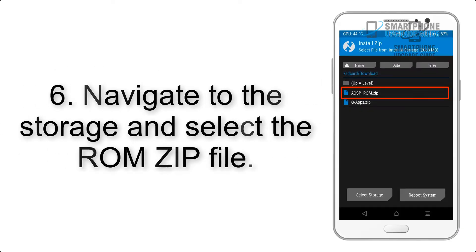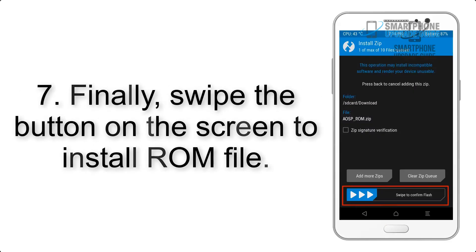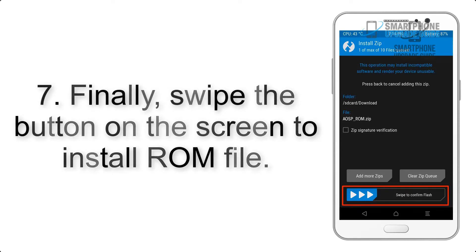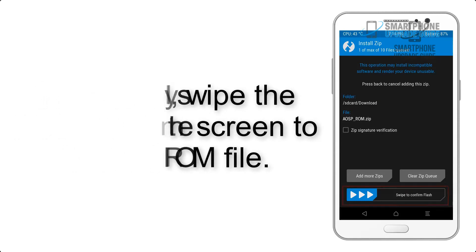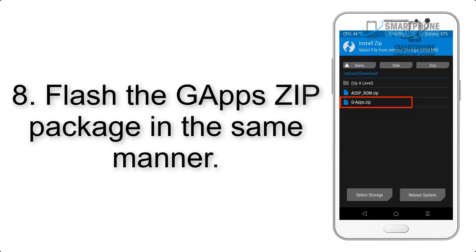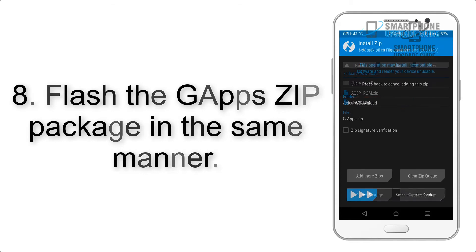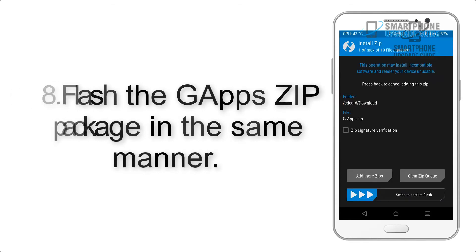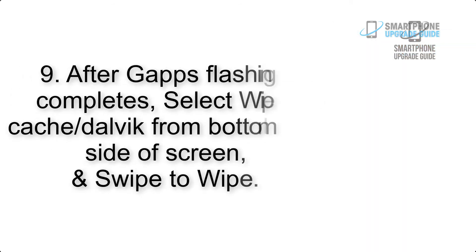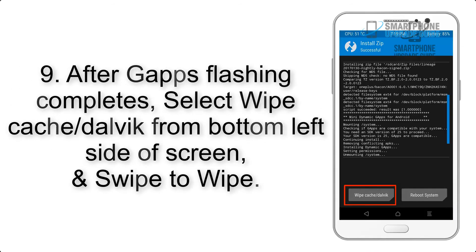Step 5: Go back to the recovery main screen and tap on the Install button. Step 6: Navigate to the storage and select the ROM zip file. Step 7: Swipe the button on the screen to install the ROM file.